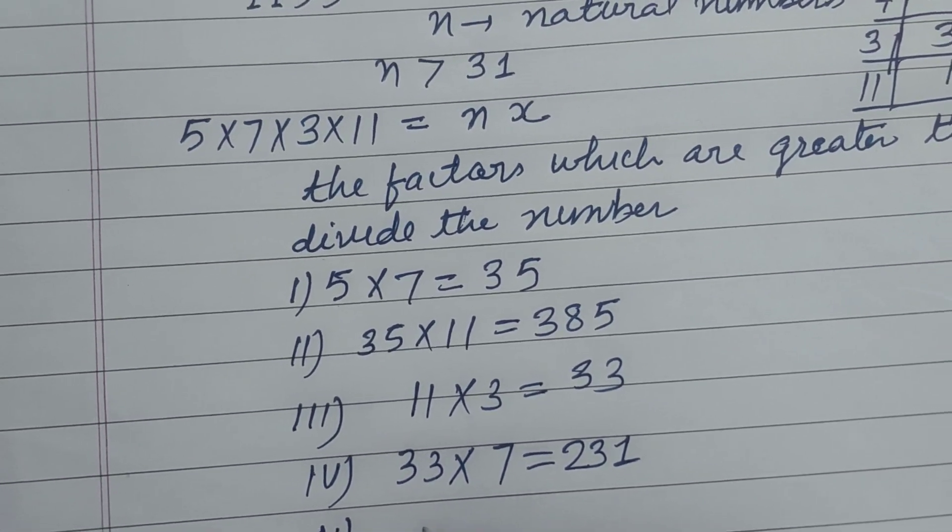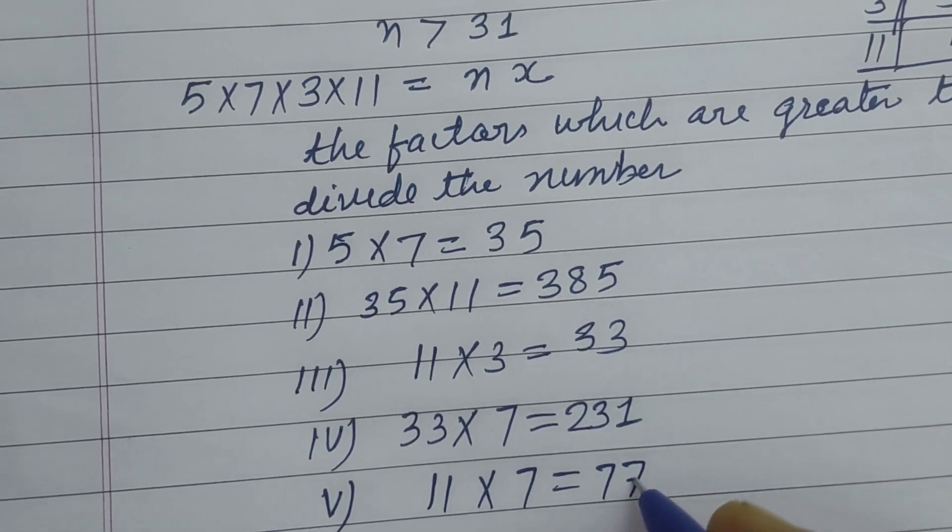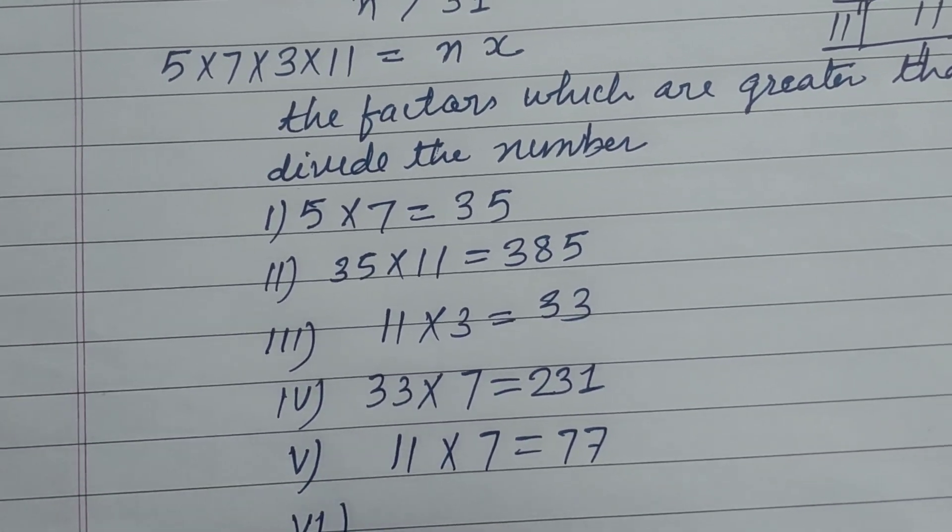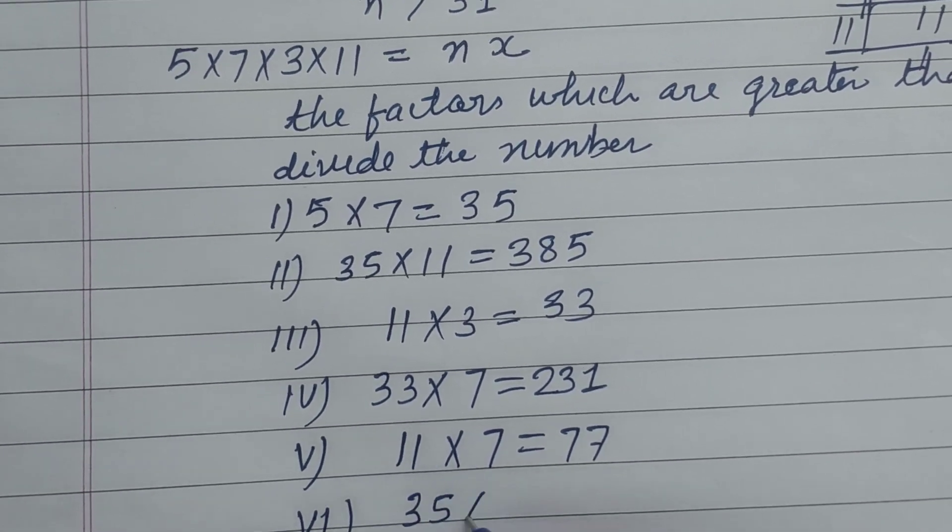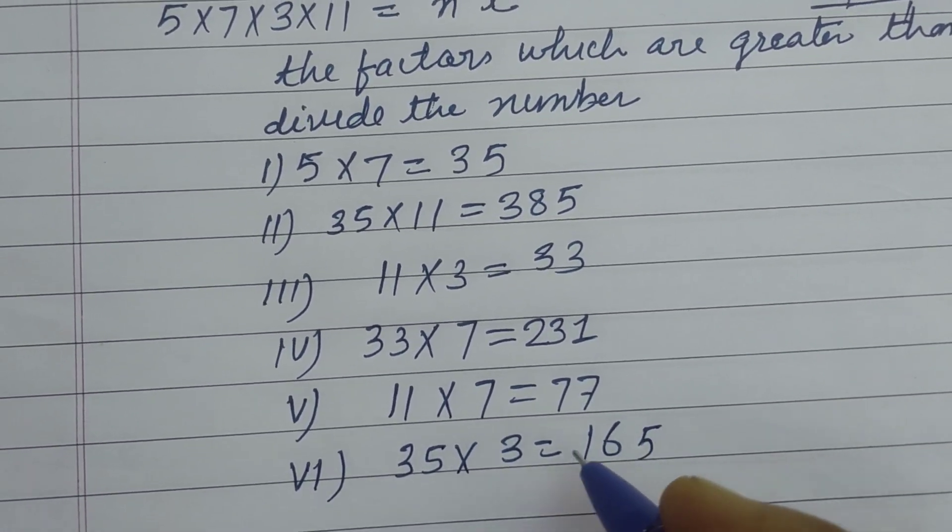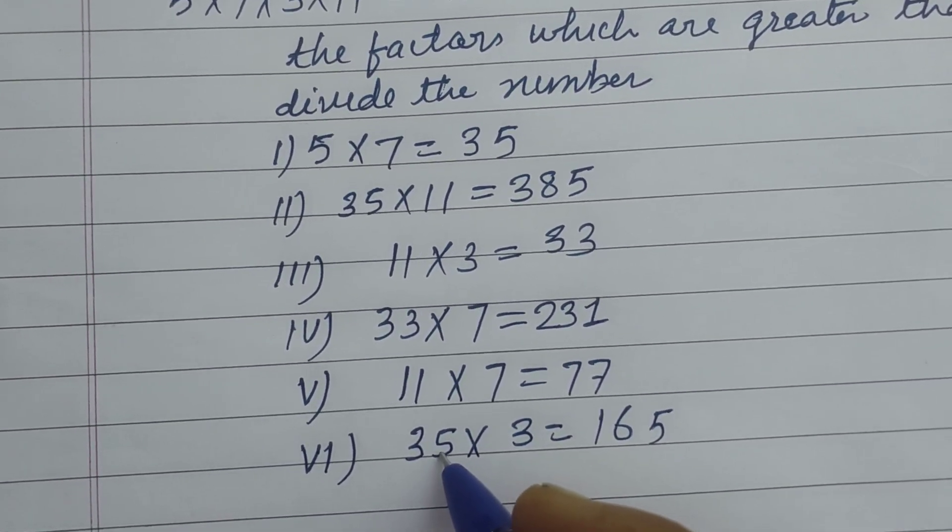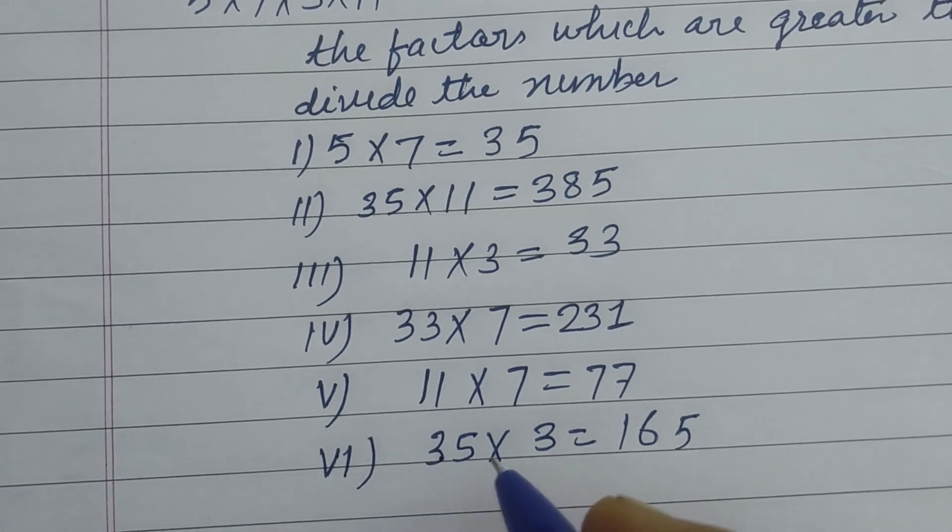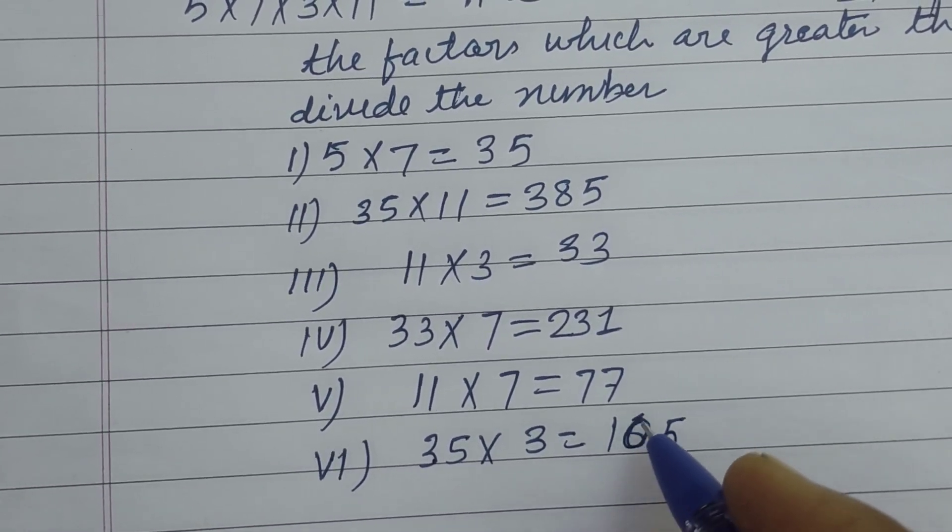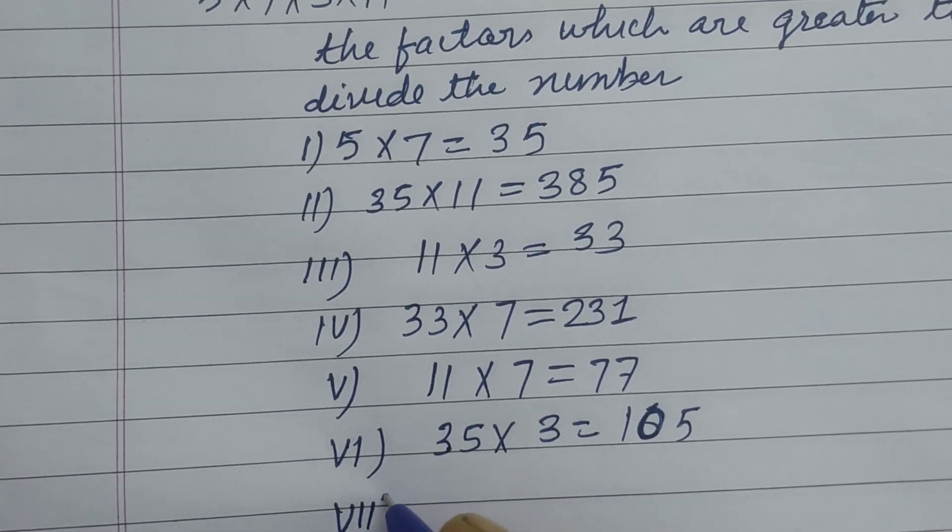Fifth is 11 × 7, this is 77. Sixth is 35 × 3, so this is 105. Seventh is 55 × 3 because 11 × 5 is 55, so 55 × 3 is 165.